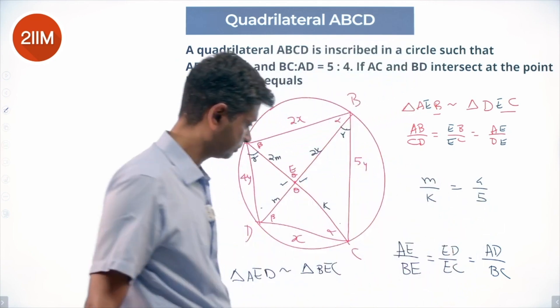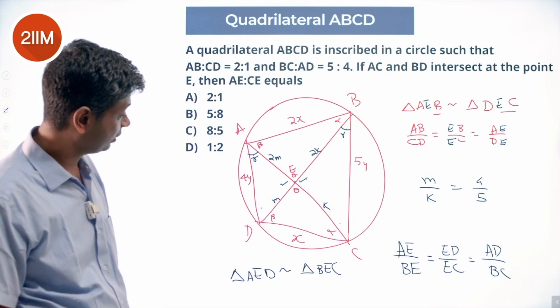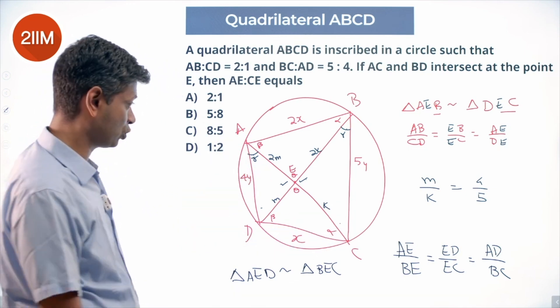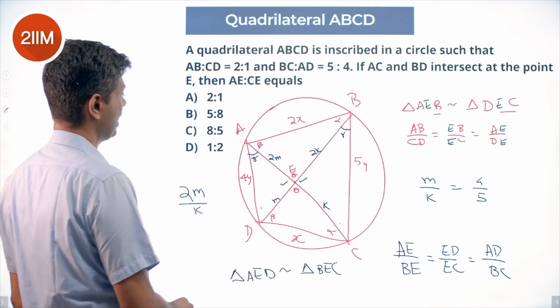What do we need to find? We need to find AE/CE. Since M/K = 4/5, we want 2M/K, which is 8/5.